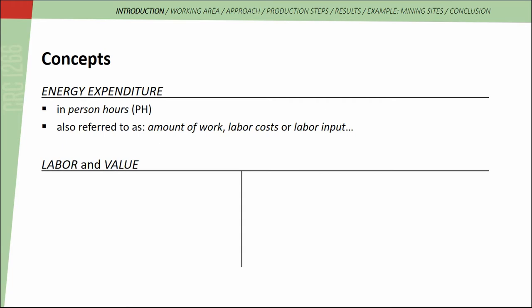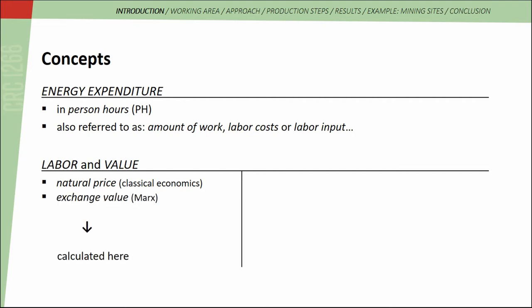The next terms I would like to discuss are labor and value. My work is based on the assumption that the invested labor reflects the so-called natural price within classical economics, which results from the sum of expenses used for the production and distribution. Karl Marx describes a similar concept which he calls exchange value. So when I talk about the calculation of energy expenditure, these are the underlying concepts. A totally different question is whether in prehistory the value of objects is also expressed in the labor invested for their production.